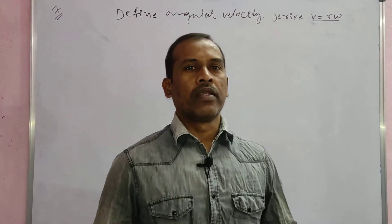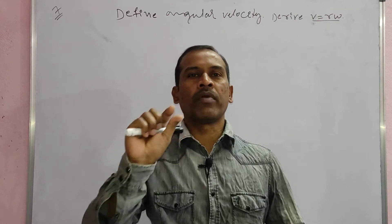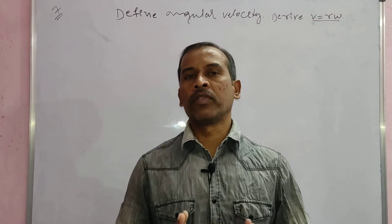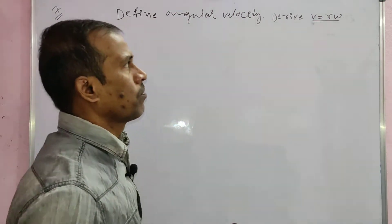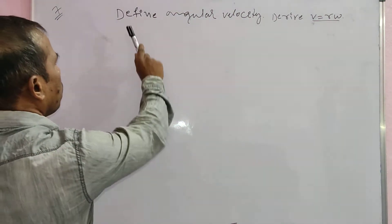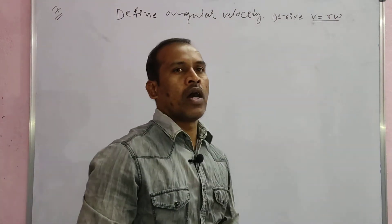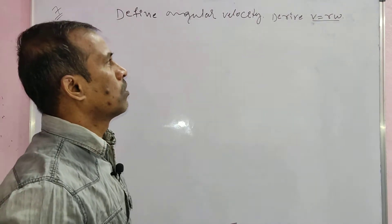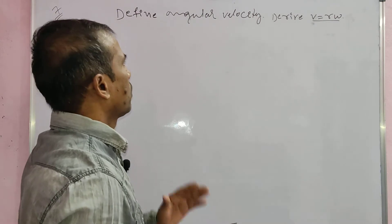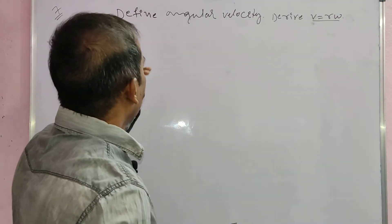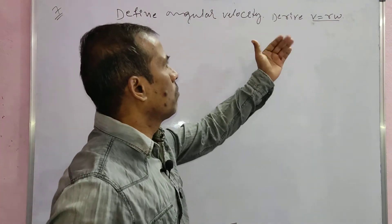First, listen in English, then explanation. This is a four-mark question, so listen carefully. The question here is: derive and define angular velocity, derive V is equal to r omega. First of all, define the statement of angular velocity - the statement is one mark. Next, derive V is equal to r omega.